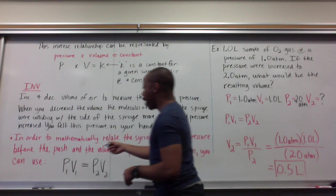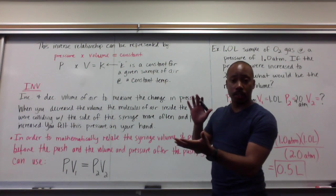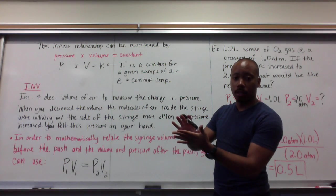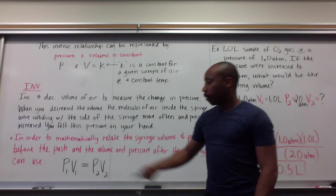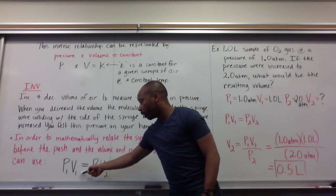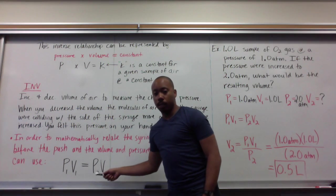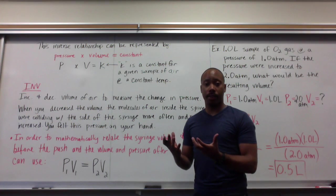In order to mathematically relate the syringe volume and pressure before you pushed and the syringe volume and pressure after you've pushed, we must use this mathematical relationship. P1 times V1 equals P2 times V2. This is the initial pressure and volume is equal to the final pressure and volume. That has to be true if we're talking about the same gas in both scenarios.